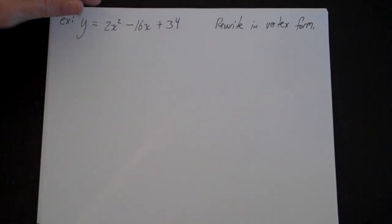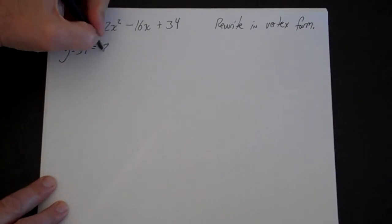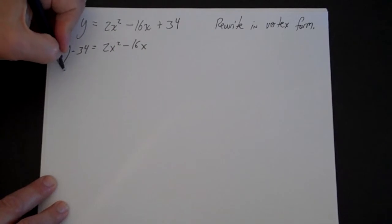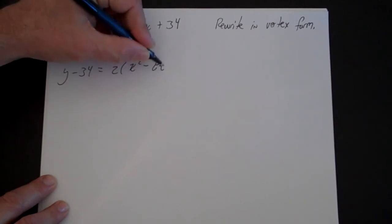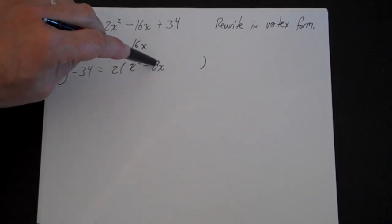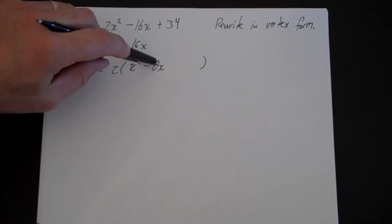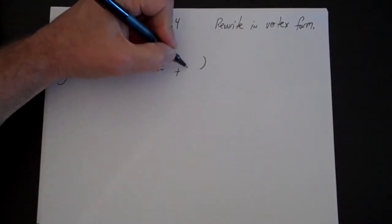First thing I'm going to do is move the 34 over here, factor a 2 out, leave a gap. Now I'm going to complete the square. So what I'm going to do is I'm going to take b minus 8, half it. Half of minus 8 is minus 4, and I'm going to square that. Minus 4 squared is going to be a positive 16, so I'm going to add 16 here.